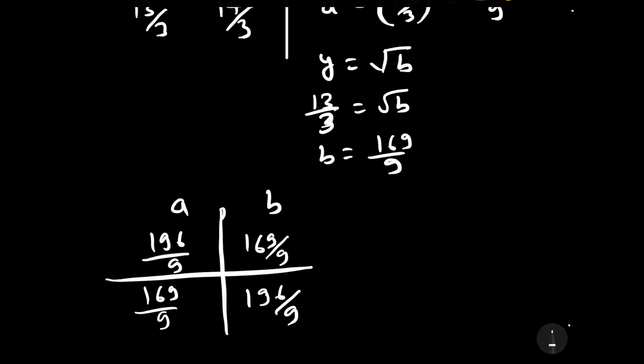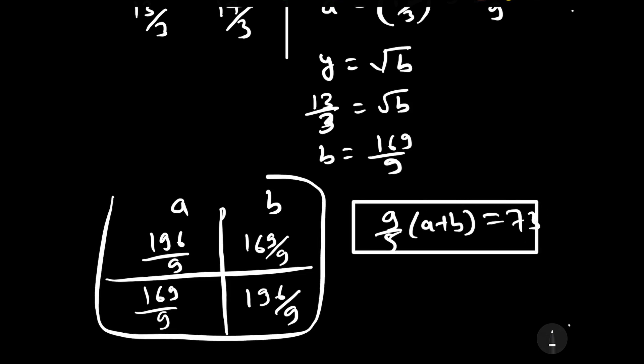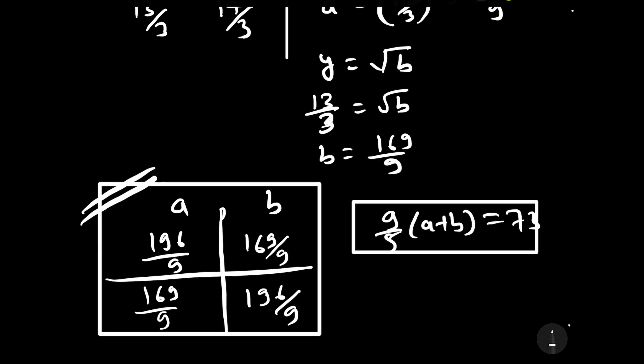Hence the required answers are: (9/5)(a + b) equals 73, and the values of a and b are 196/9 and 169/9 (or 169/9 and 196/9 respectively). Thanks for watching this solution. Please subscribe to our channel, press the bell icon, and don't forget to like, comment, and share.